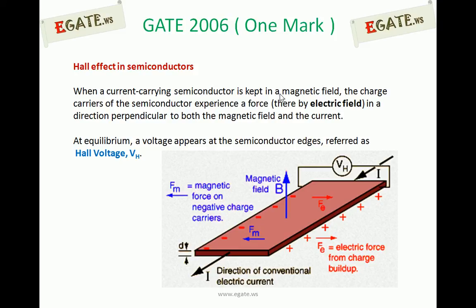At equilibrium, a voltage appears at the semiconductor edges, which is referred to as Hall voltage. When a current-carrying semiconductor is kept in a transverse magnetic field — that is, the magnetic field and current must be perpendicular to each other — a force acts on the charge carriers, and an electric field exists in the same direction. At equilibrium, a voltage appears at the semiconductor edges, referred to as Hall voltage.